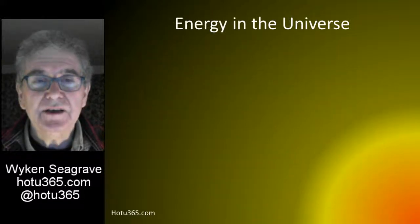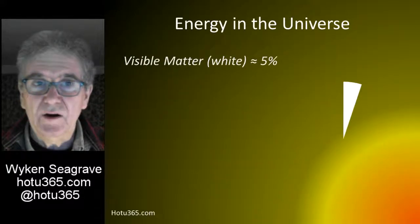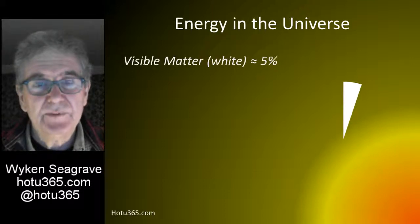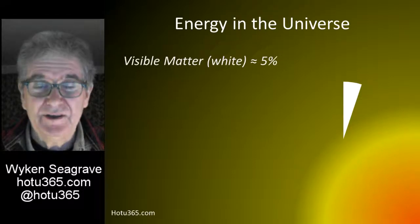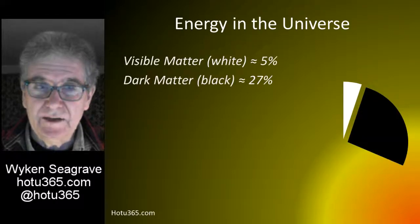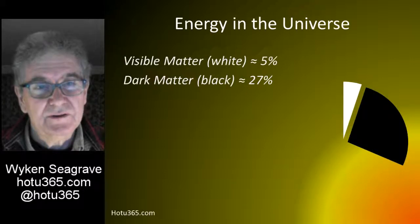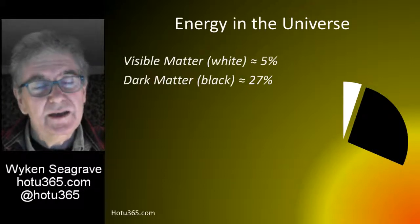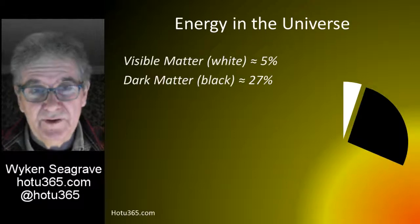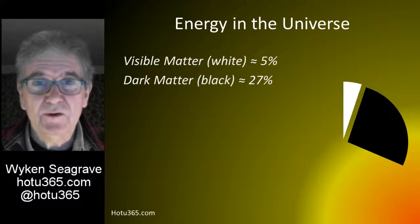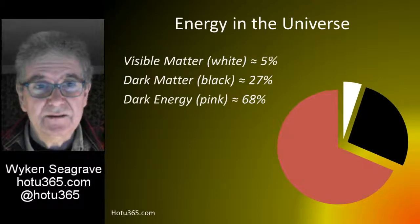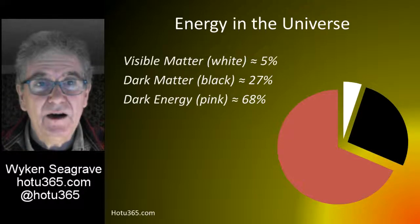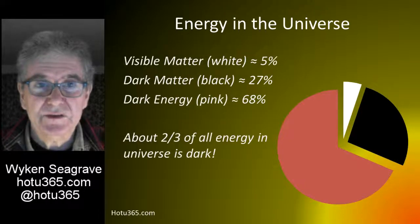The energy in the universe consists of the visible matter, which is about 5% of the energy we think exists in the universe. The dark matter, which we have already talked about, comprises about 27% of the total amount of energy in the universe. And the rest - about 68% - is this dark energy. So it's about two thirds of all the energy in the universe.